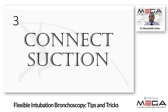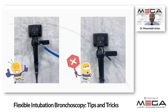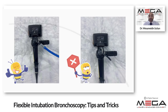Number three: connect suction, which is a very important tool during intubation with flexible bronchoscopy. You can also use antisialogogue medications like glycopyrrolate or small doses of atropine to decrease secretions. The suction helps guide you as you go through the pathway toward the trachea. Don't be reluctant to use it properly at the proper time.